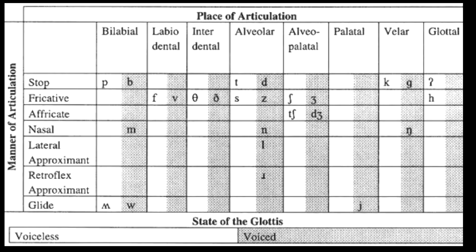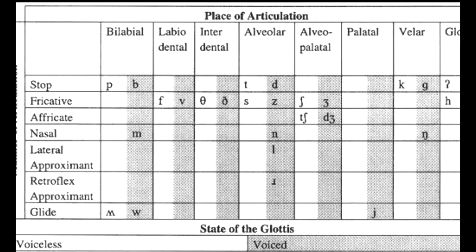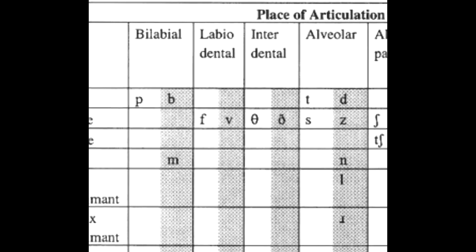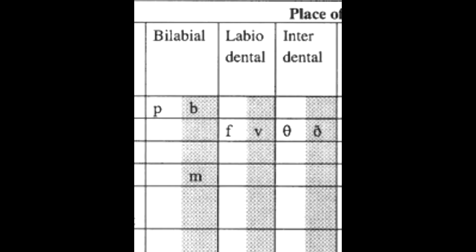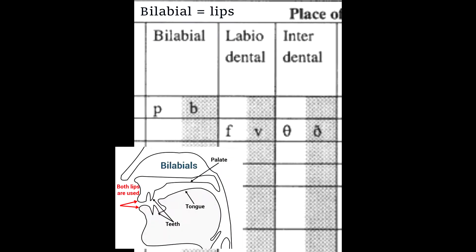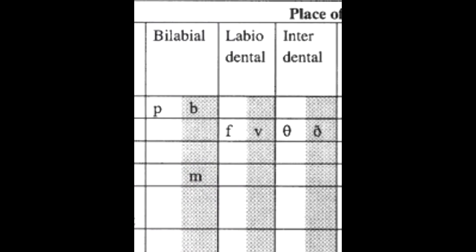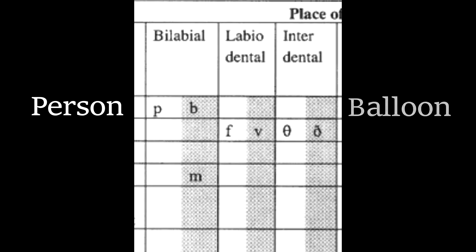Let's look at the place of articulation line first. Starting on the left side, we have bilabial, which means both lips. Sounds like P, which is voiceless, and B, which is voiced. For example, words like 'person' or 'balloon'.